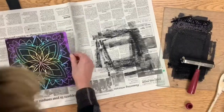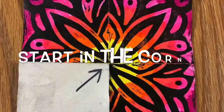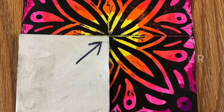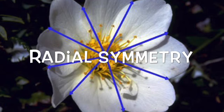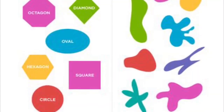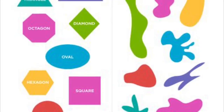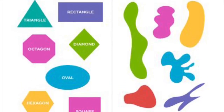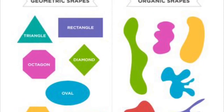As a reminder, please start your designs in the corner so that you can grow them out from one center point — the same all around, just like a flower. Then think about what kinds of shapes you want to include in your design: geometric, organic, or both?